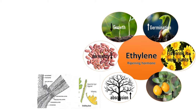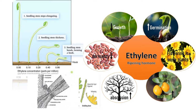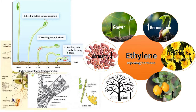Ethylene breaks dormancy as it favors germination. When seedlings are treated with ethylene, there is a characteristic triple response: stem elongation stops, the stem thickens horizontally, and the seedling bends to form a hook-like structure. This is called the triple response.